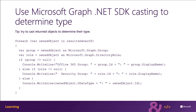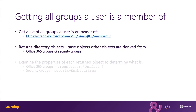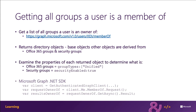Microsoft Graph can also be used to obtain a list of all groups a user is a member of. This is done by using the memberOf property on the user itself. I can do that either by going to the /me/memberOf endpoint or to the /users/{id}/memberOf property. Like the previous example, this list returns a collection of directory objects, and you can examine the properties of each object returned to determine what kind of object it is.